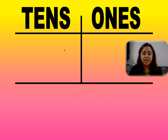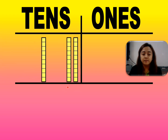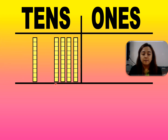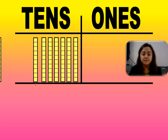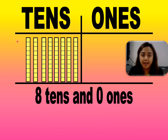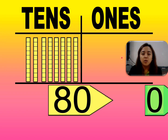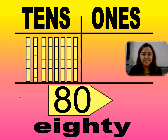Tens, ones. Ones is equal to zero. And tens, we have one, two, three, four, five, six, seven, eight. So we have only eight tens and zero ones. Eight tens is equal to eighty. Zero ones is equal to zero. So the total is eighty.